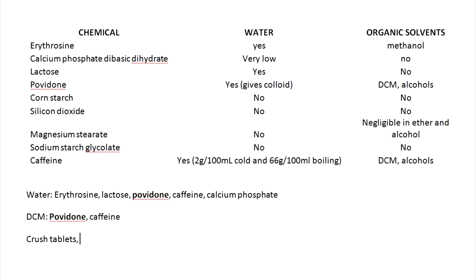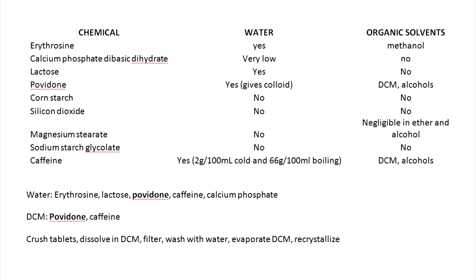So from this point we can start designing our extraction. We start off by crushing the tablets, then dissolve everything into some DCM, filter off any solids, wash the DCM with some water to get rid of the water-soluble stuff, evaporate the DCM, and then recrystallize our caffeine. One important thing to note is that for any extraction there's a huge array of different solvents and methods that can be used, and this just happens to be the one that I came up with.